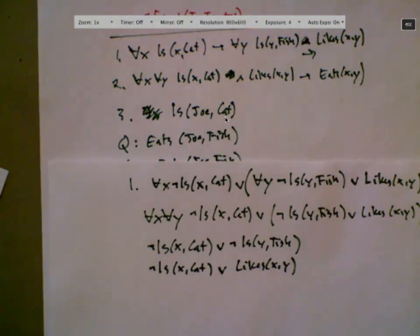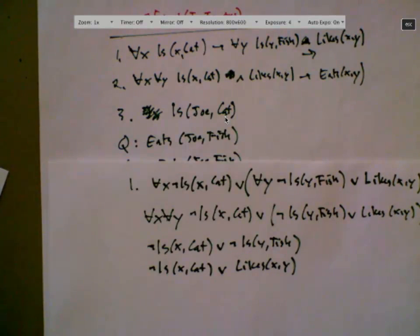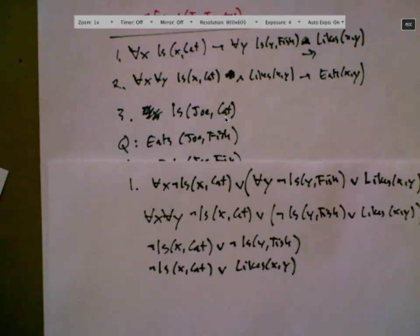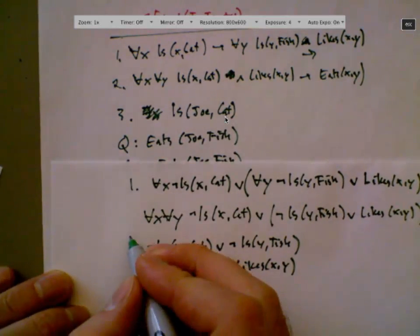That's CNF. This is a big AND — I didn't even write the and because everything gets ANDed together. These are just ORs — short, little clauses. It's either a predicate or a negated predicate. This is CNF: nice, simple, uniform format. As computer scientists, we are happy.